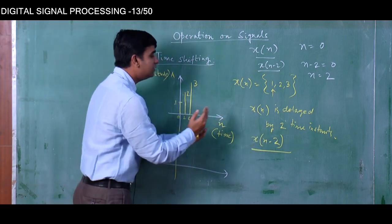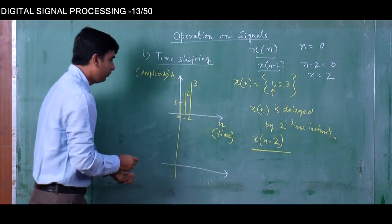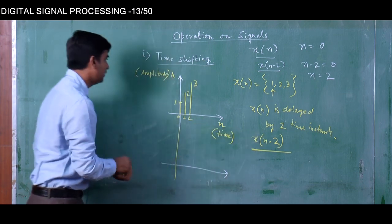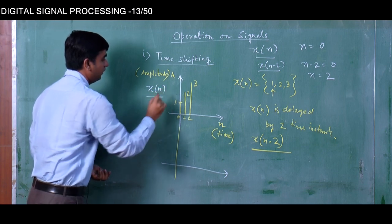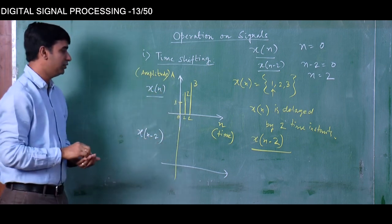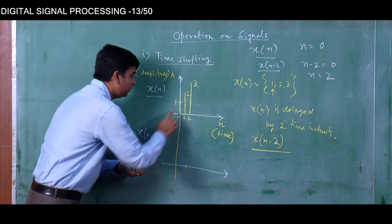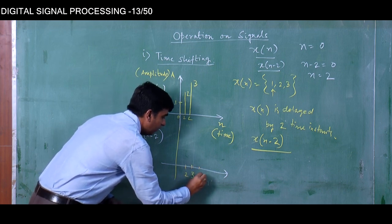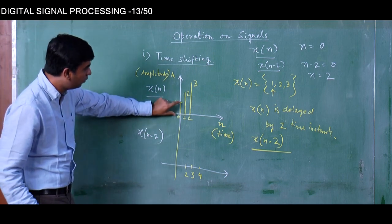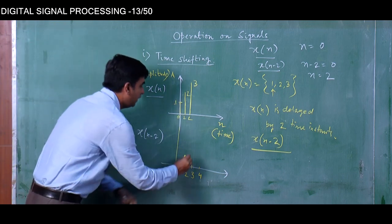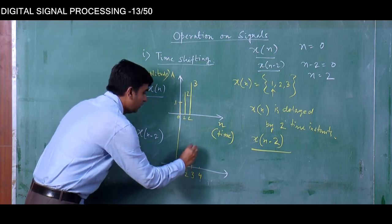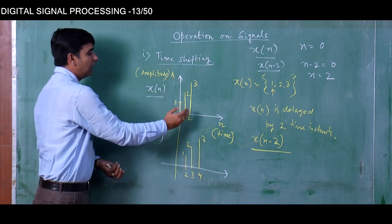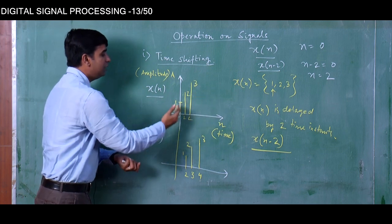n minus 2 means it is delayed by 2 instants. So the new delayed sequence, instead of starting at 0, will start at 2, then have its value at 3, and then at 4. The value that was at 0 will now be at 2 because it is delayed by 2. So here it will be 1, at 3 it will be 2, and at 4 it will be 3. These 3 values are shifted by 2 time instants each.